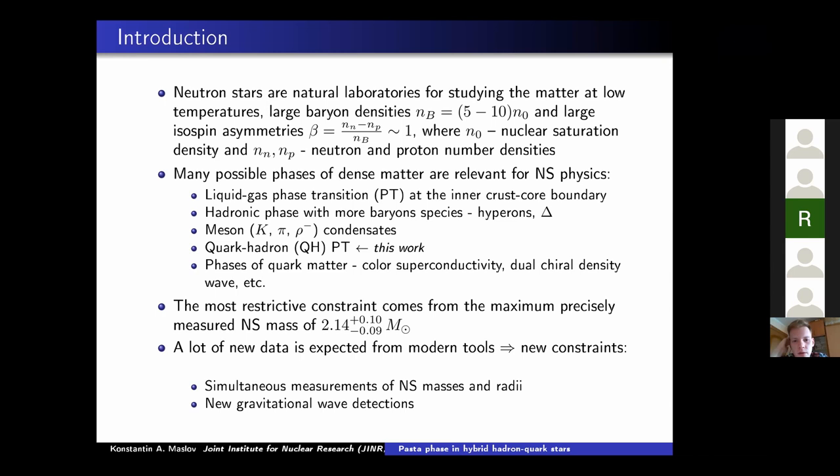Liquid gas phase transition between inner crust and core. Many possible phase transitions within the hadronic models and no need for quarks so far, like appearance of hyperons, deltas, meson condensates. Of course, the quark hadron phase transition, which I will talk about in this talk, and many phases of quark matter as well. From the studies of neutron stars, the most restrictive constraints is the maximum neutron star mass constraint. And also, many new constraints can be expected from simultaneous measurements of neutron star masses and radii and new gravitational wave detections.